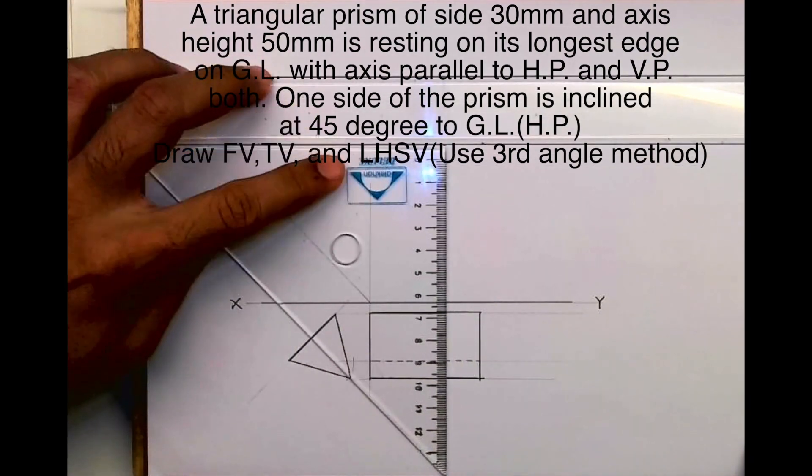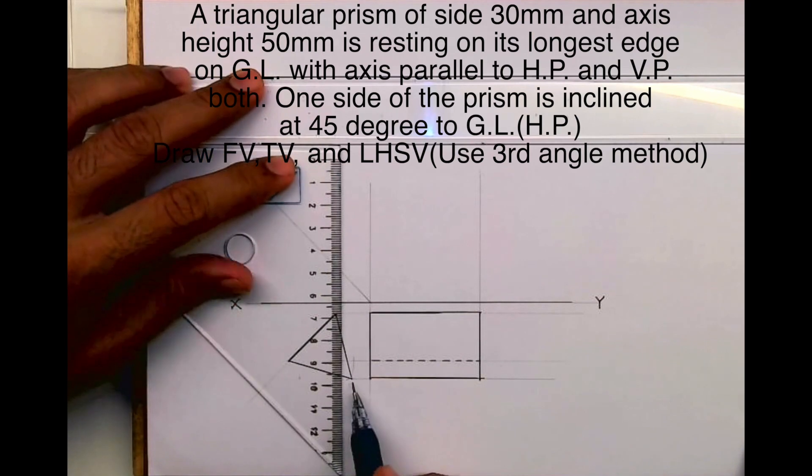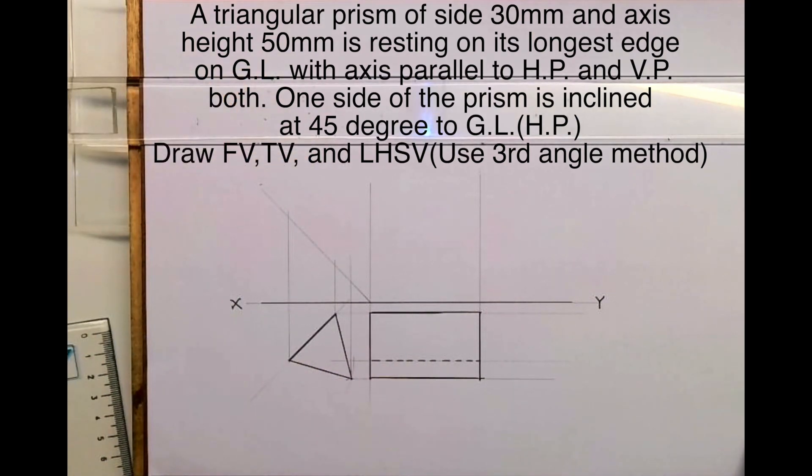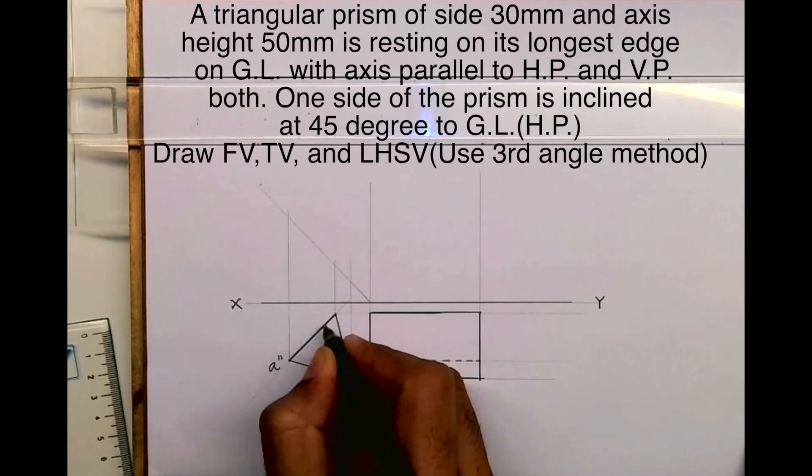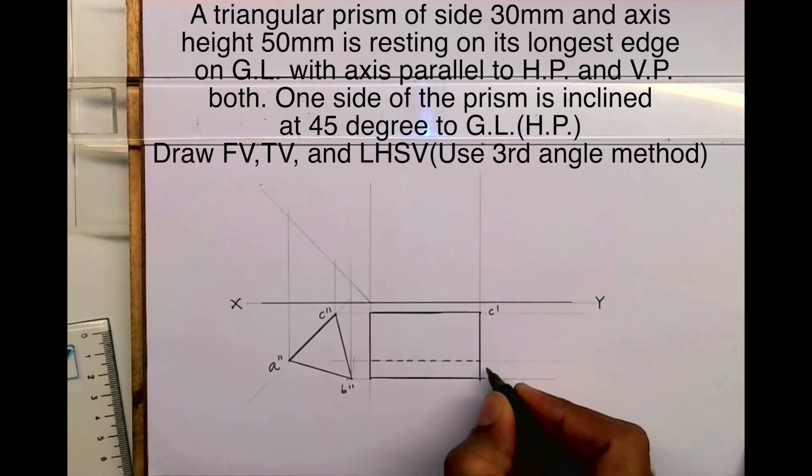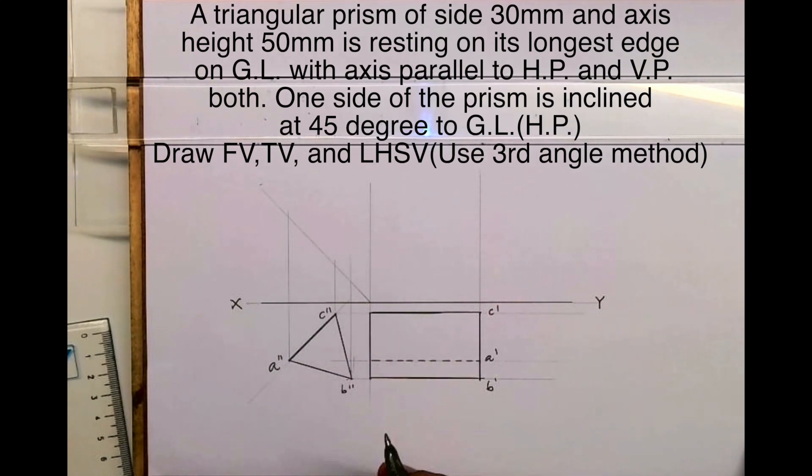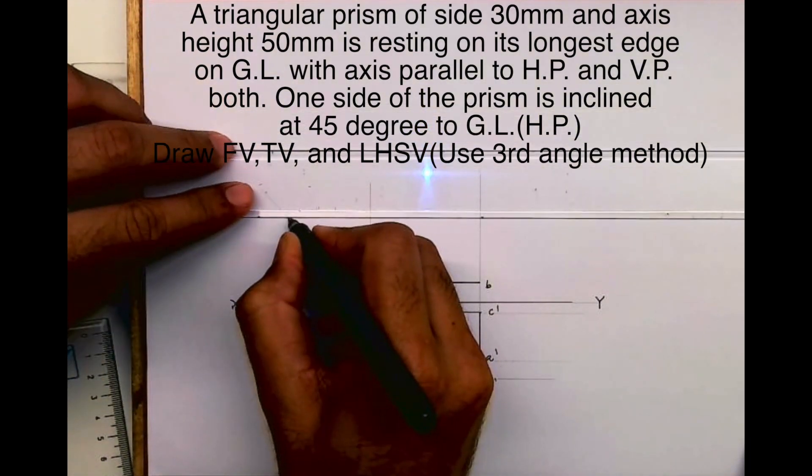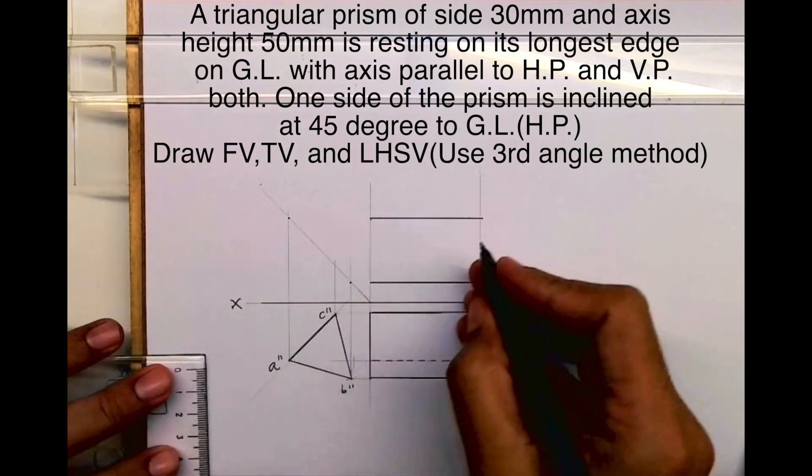And when we'll draw the top view, now if you realize, if I'm not doing naming, then it's a problem. It's difficult. That's why I'm doing naming, so it becomes easier. So this one will be B, this one will be A.